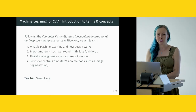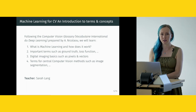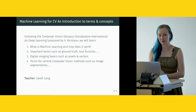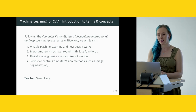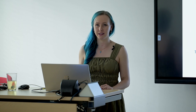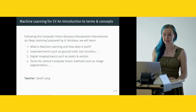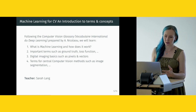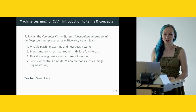The first session is Machine Learning for Computer Vision: an introduction to terms and concepts — also called the glossary — following the computer vision glossary prepared by our colleague Angelos. We will learn basics such as what machine learning is and how it works, important terms such as ground truth and loss function, digital imaging basics such as how an image is made up of pixels, how we train data using vectors and tensors, and terms for central computer vision methods such as image segmentation.